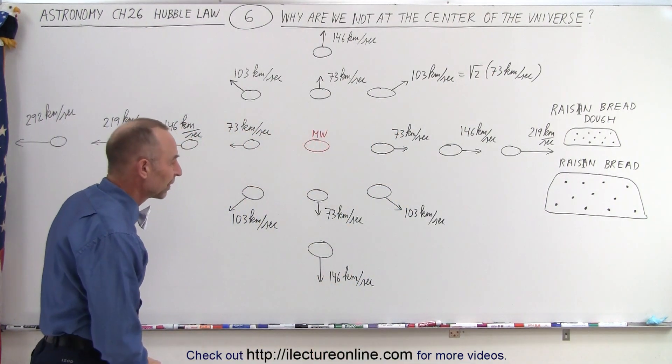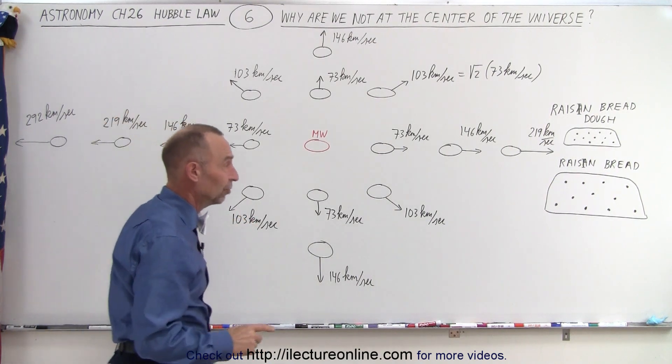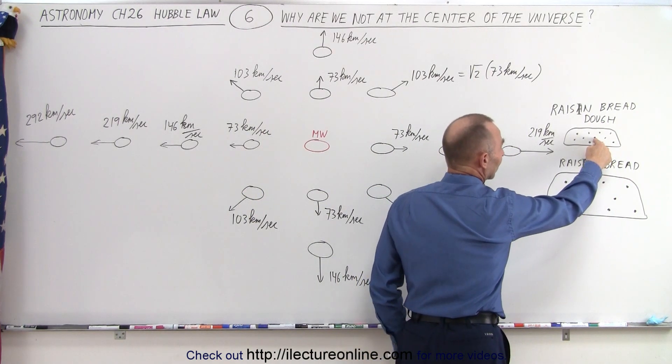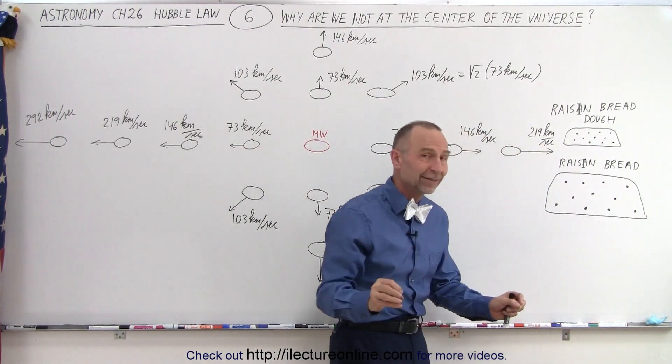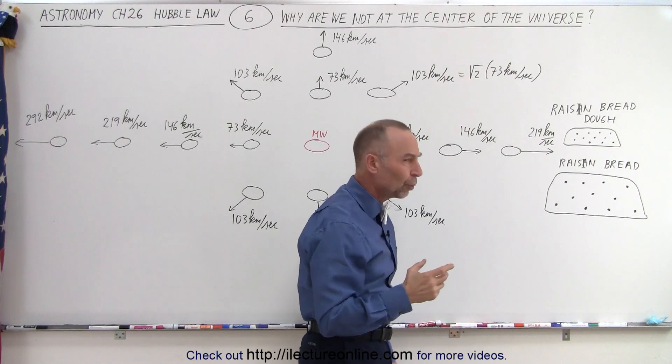Approximately, of course. And so you can see that, yes, from our vantage point, that's indeed what it appears. And so you can say that if you're one of the raisins, so this is our Milky Way galaxy, then of course all the galaxies would be moving away from us just like the raisins in raisin dough that's expanding because of the yeast.